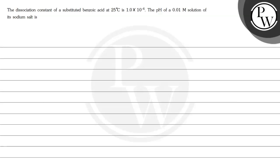Hello children, let's see the question here. The dissociation constant of a substituted benzoic acid at 25 degrees Celsius is 1 multiplied by 10 raised to the power minus 4. The pH of a 0.01 molar solution of its sodium salt is?